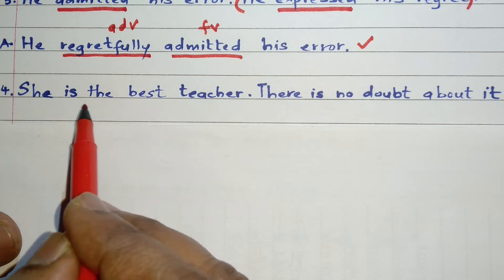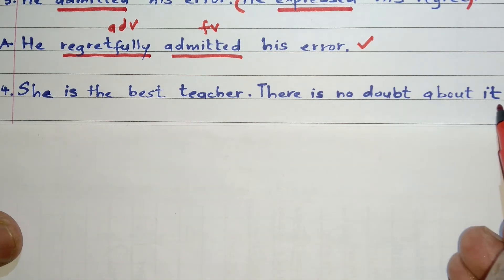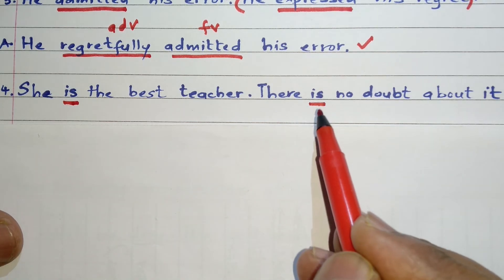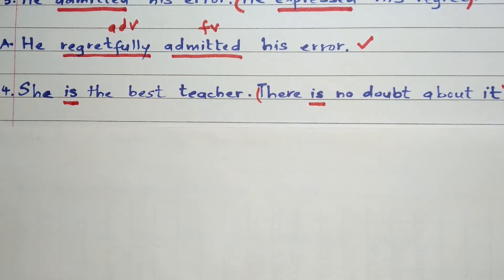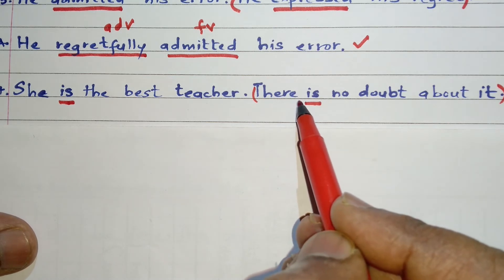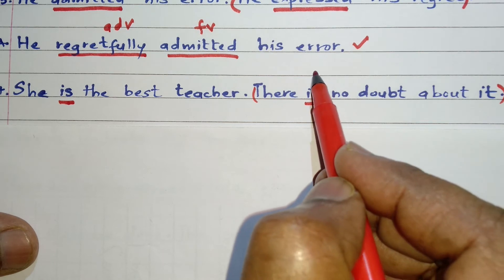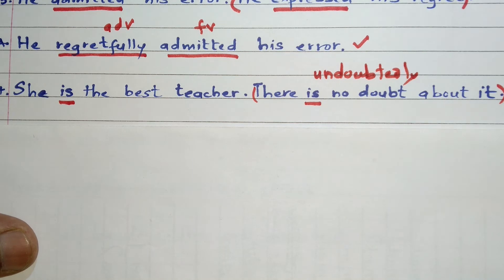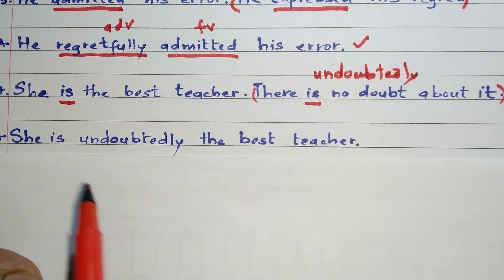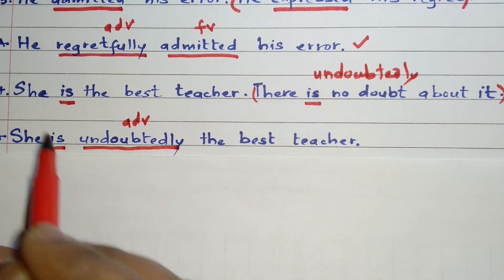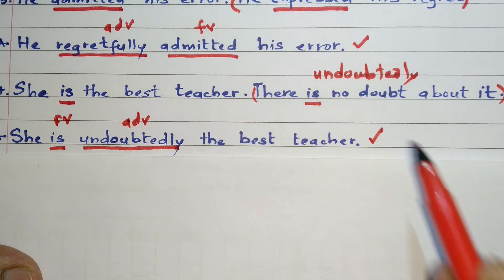Another example: She is the best teacher. There is no doubt about it. In the first sentence, 'is' is the finite verb. In the second sentence, also 'is' is the finite verb. We can eliminate the second sentence and replace it with one word. Instead of 'there is no doubt about it,' we can say 'undoubtedly.' So our answer will be: she is undoubtedly the best teacher. Here 'undoubtedly' is an adverb, and 'is' is the only finite verb, so our answer is a simple sentence.